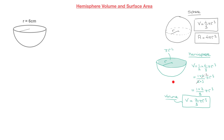Consequently, the total surface area of a hemisphere — including the curved surface area and the disk at the top — is given by: A = π r² + 1/2 × (4 π r²). Now, 1/2 × 4 = 2, so this equals π r² + 2 π r². Adding those together, we obtain the formula for the total surface area of a hemisphere, which is 3 π r².